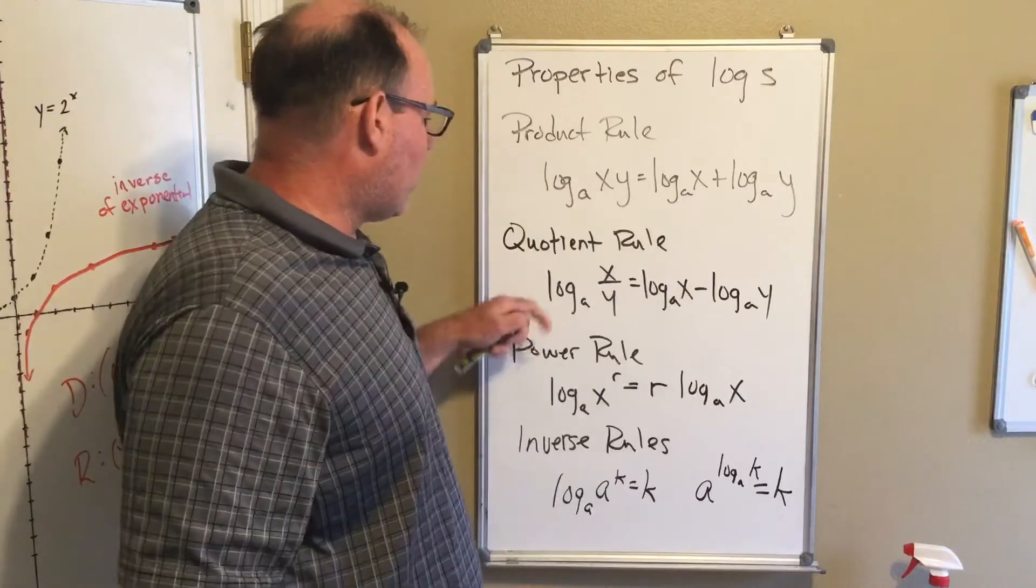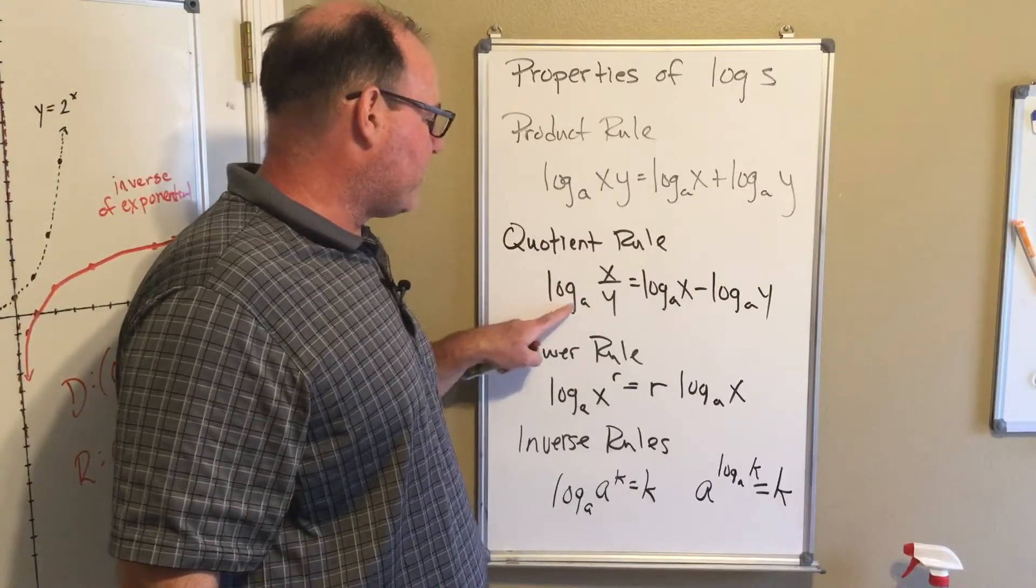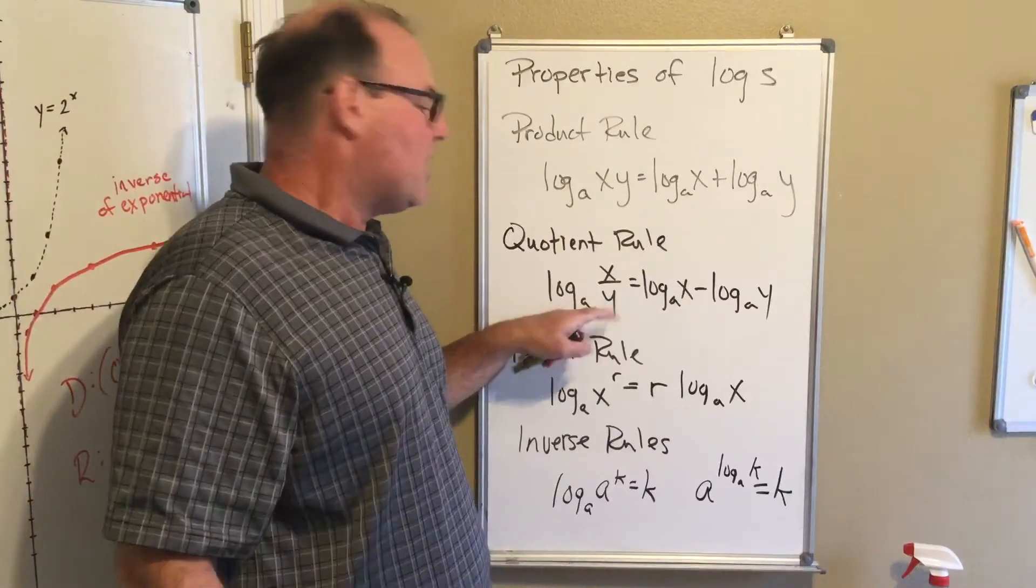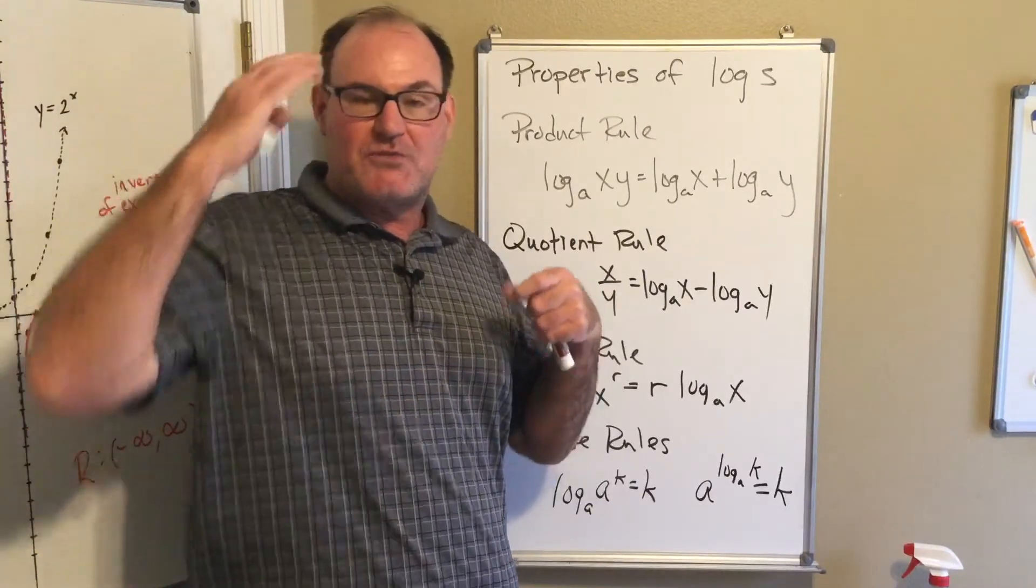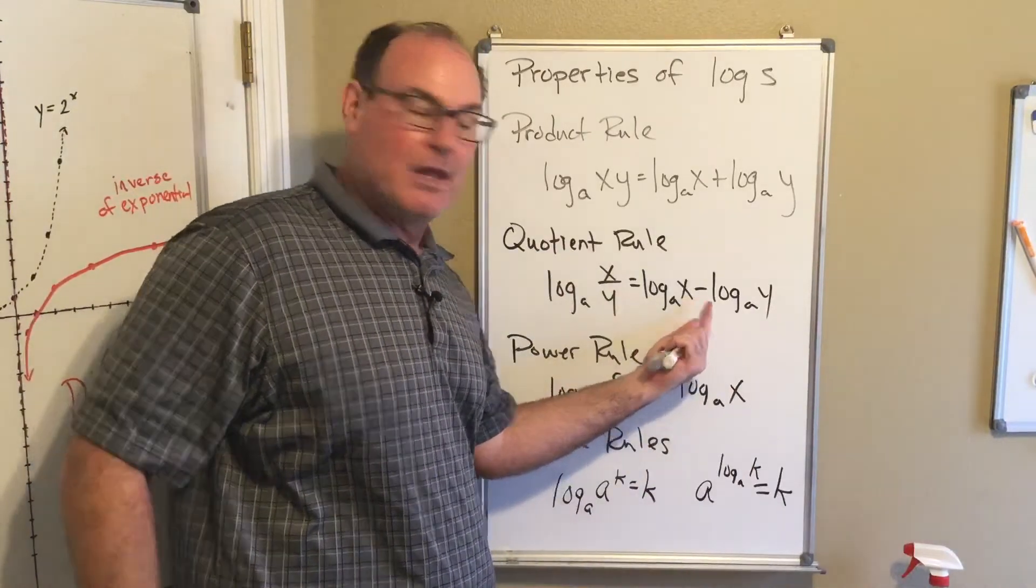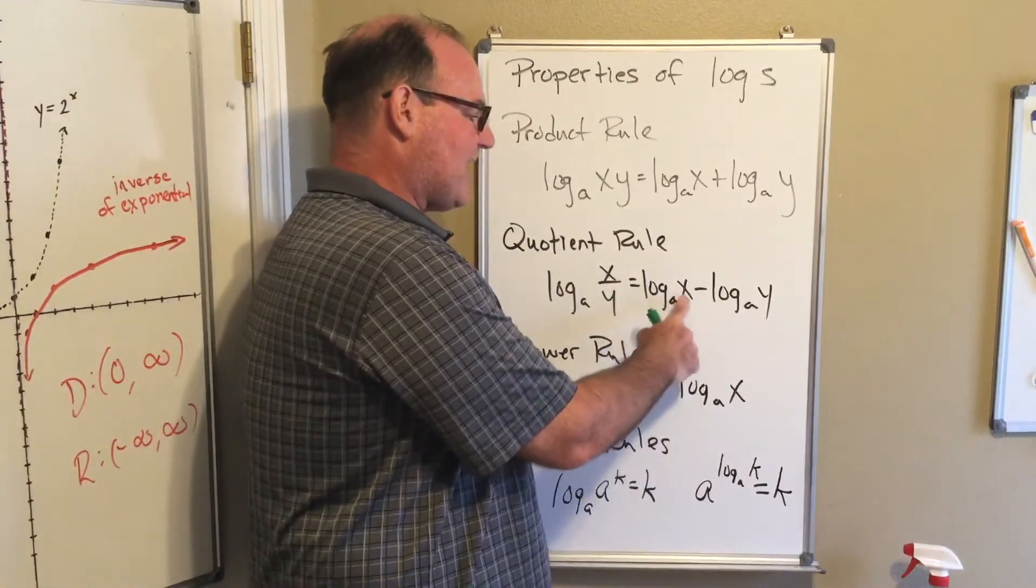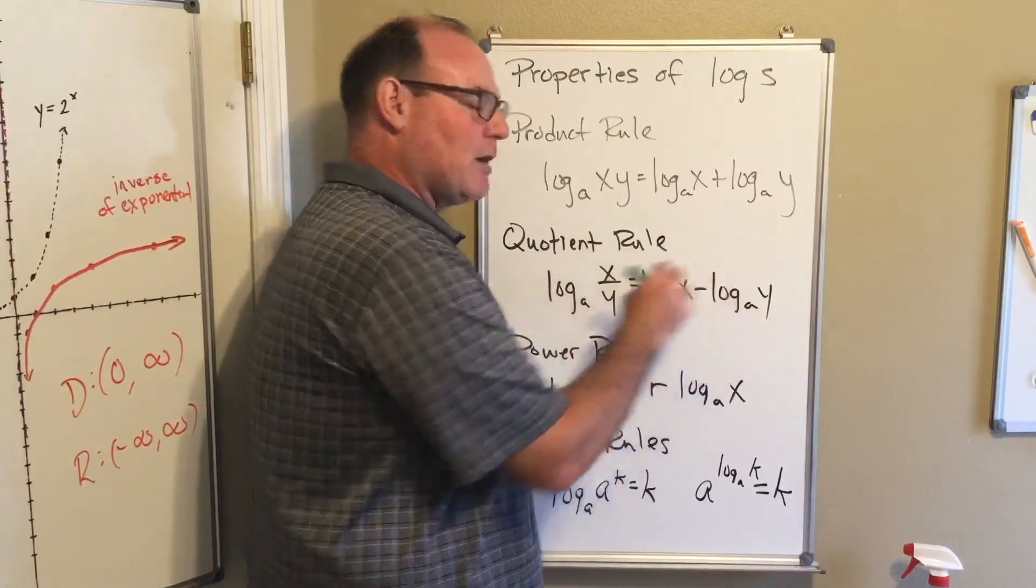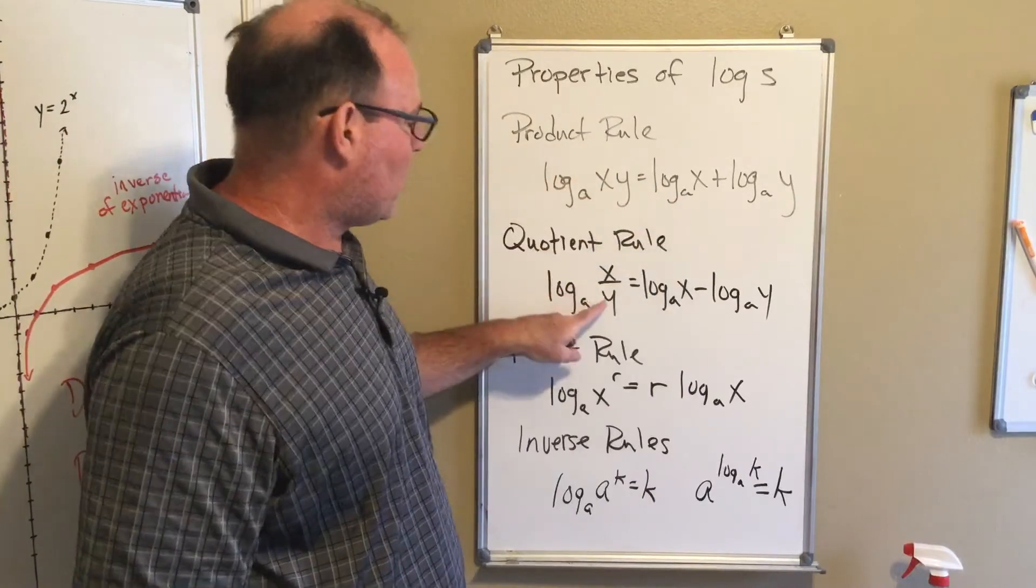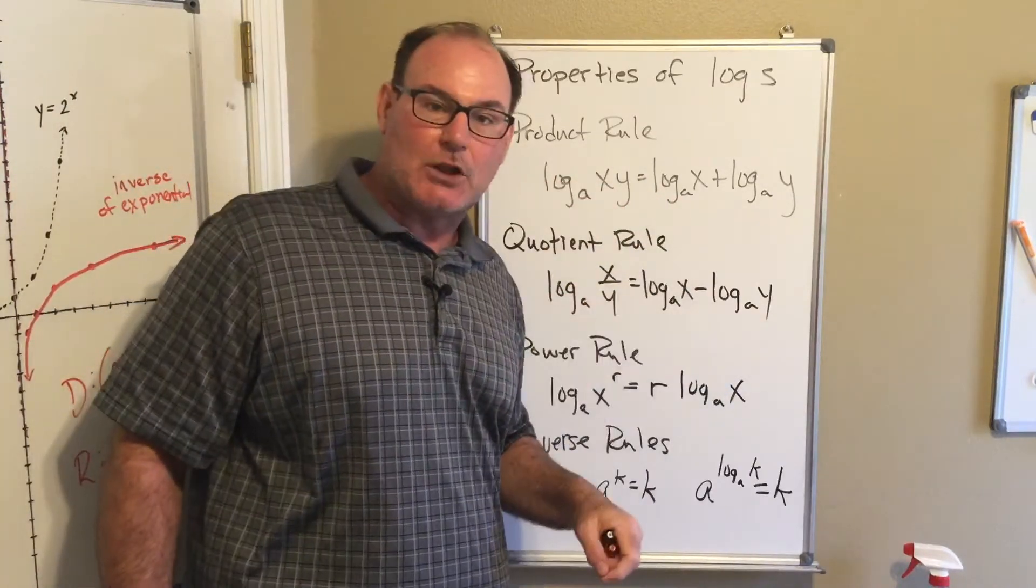Similarly, when you are dividing, so when I have the logarithm base a of x divided by y, this is called the quotient rule. Quotient means division. Remember, what do you do when you divide your bases? What happens to the powers? You subtract them. So this is the log base a of x minus the log base a of y. I can take whatever's in the numerator with the first logarithm minus whatever's in the denominator for the second logarithm.